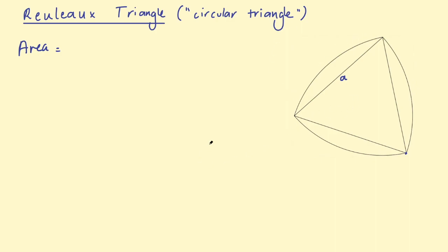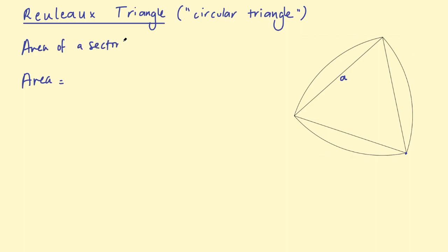The area of a sector — which you need to know how to find for GCSE Mathematics — is basically a fraction of a circle. Whatever angle we have is going to determine that fraction. We know that the angles in an equilateral triangle are 60 degrees, so this area is going to be 60/360 multiplied by the total area of that circle, which is pi times the radius squared. In this case the radius is A, so this will be A squared. This simplifies to (1/6)πA².